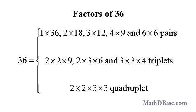36 can also be factored into triplets: 2 times 2 times 9, 2 times 3 times 6, or 3 times 3 times 4, and into one quadruplet: 2 times 2 times 3 times 3.